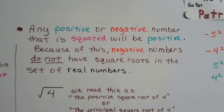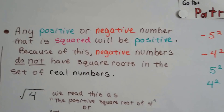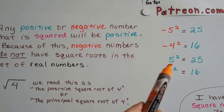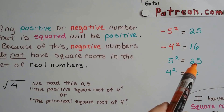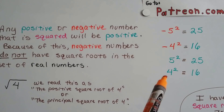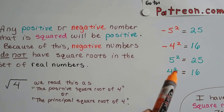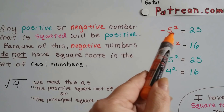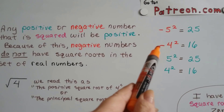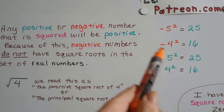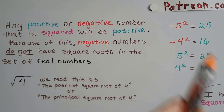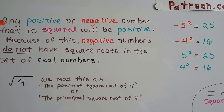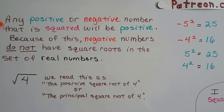Any positive or negative number that is squared is going to be positive. So if we have positive 5 to the second power, it's a positive number. 4 that's positive and squared is going to be a positive number. A negative 5 that's squared is going to be positive, and a negative 4 that's squared is going to be positive, because negative times negative makes positive.